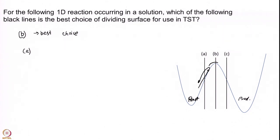You can have recrossings at B as well, but at B a trajectory that crosses is subject to a force that inclines it to keep on moving forward. At A, a trajectory going up might not have enough energy and just turns back — so A has more recrossings, which is not good. In transition state theory our assumption is no recrossing, so the best choice is where the recrossings are minimal. A has more recrossings compared to B.